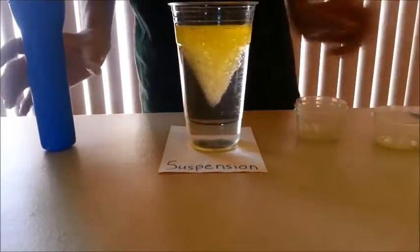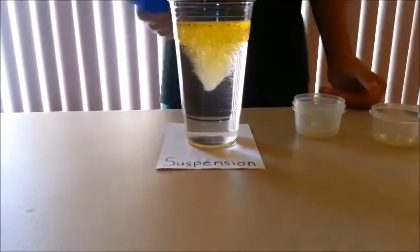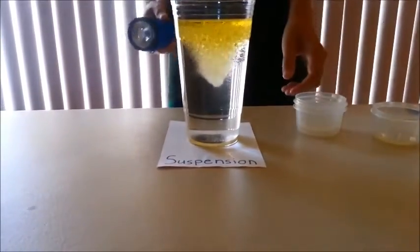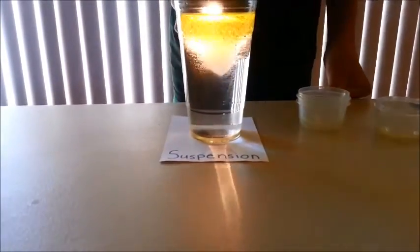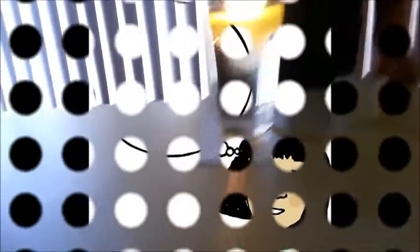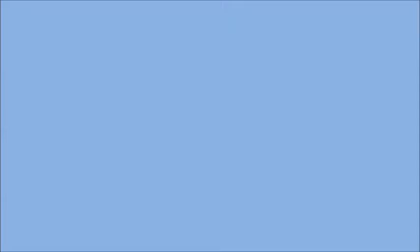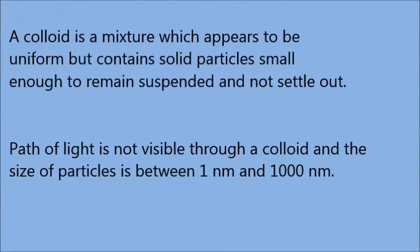For suspension, the particles easily separate and light can easily pass through. What is a colloid? A colloid is a mixture that appears to be uniform but contains solid particles small enough to remain suspended and not settle out. The path of light is not visible through a colloid, and the size of particles is between one nanometer and 1000 nanometers.